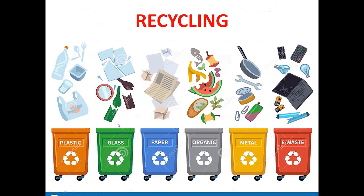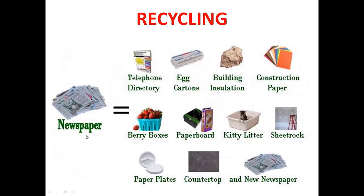In recycling, all materials are segregated from waste — plastics, glass, paper, organic material, metals, and e-waste are each collected separately to be recycled. For example, by recycling old newspaper, many items can be formed: telephone directories, egg cartons, building insulation, construction paper, berry boxes, paperboard, cat litter, sheet rock, and paper plates.